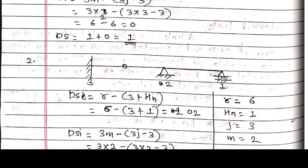For beam calculation, the degree of static indeterminacy is very simple. Without formal calculation, you can find it by: reactions minus equations. For this beam with internal hinge: 3 + 2 + 1 = 6 reactions. We have 3 equilibrium equations, plus 1 for internal hinge = 4 total equations. So 6 minus 4 = degree of static indeterminacy of 2. For the link beam: 6 reactions, 3 + 2 = 5 equations (link gives 2 extra), so 6 minus 5 = 1.